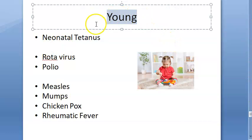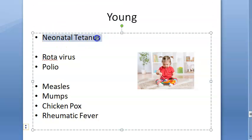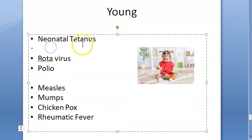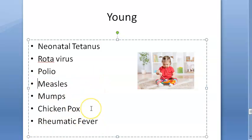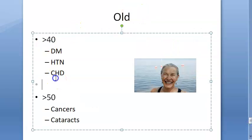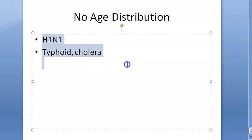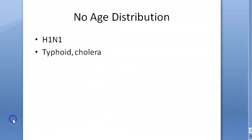Going back to age: young people are affected by neonatal tetanus, rotavirus, polio (0-5 years), measles (up to 3 years), mumps and chickenpox (5-9 years), and rheumatic fever (5-15 years). These are approximate peak times. Above 40, people get diabetes mellitus, hypertension, and coronary heart disease. Above 50, cancer and cataract. There is no age distribution for influenza, typhoid, or cholera — young and old alike can get these.